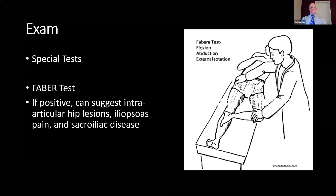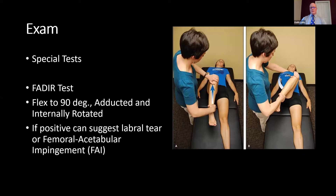The first special test is the FABER test — flexion, abduction, and external rotation. If it's positive, it can suggest articular hip lesions, iliopsoas pain, and/or sacroiliac disease. Then the FADIR test — flexion, adduction, and internal rotation — if positive, this will tend to suggest a labral tear or possibly femoral acetabular impingement.